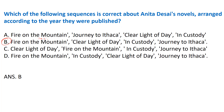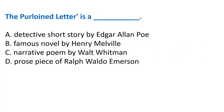The publication years of Anita Desai's novels are: Fire on the Mountain - 1977, Clear Light of Day - 1980, In Custody - 1984, and Journey to Ithaka - 1995. So Option B is correctly arranged in sequence according to the year of publication.